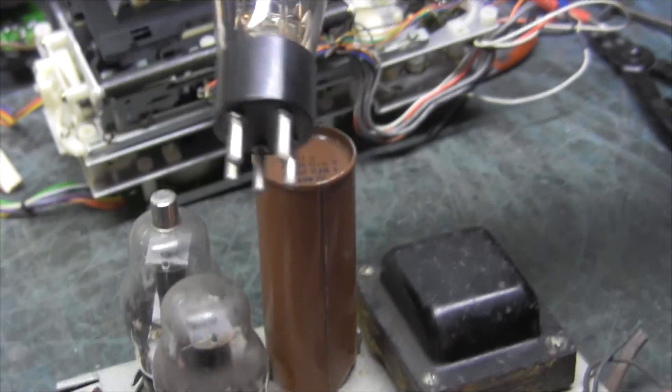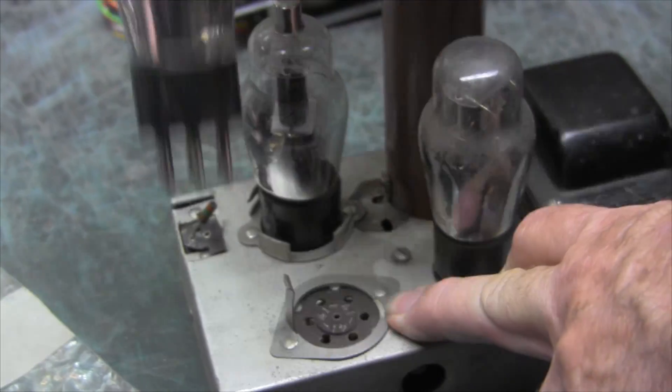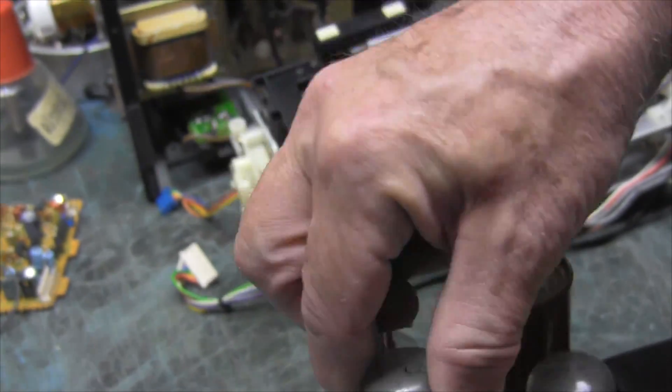This one has the pillar base tubes, there's your rectifier, a number 41 output tube, which is fairly common.